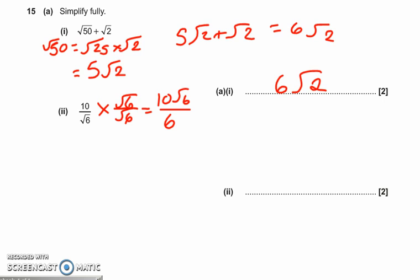That fraction can be simplified. Take out a factor of 2, we get 5 root 6 over 3. And that's as simple as that fraction can get.